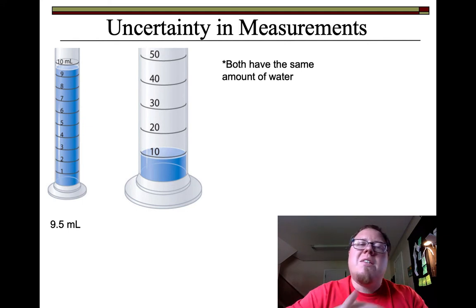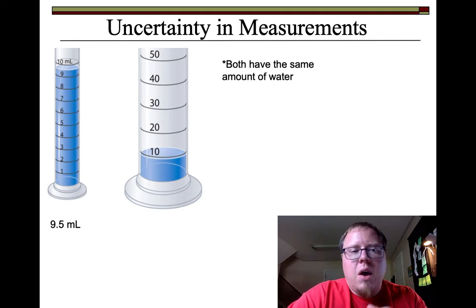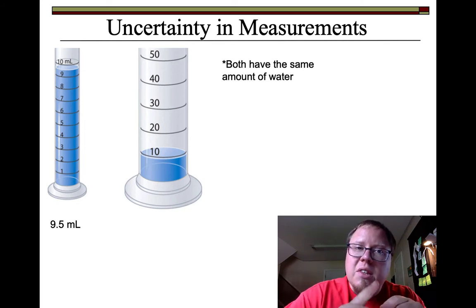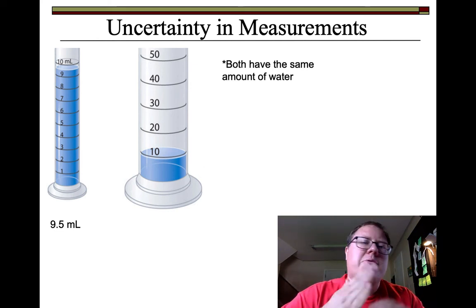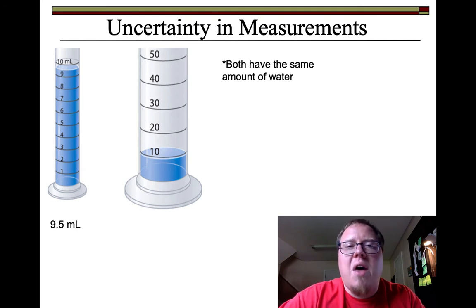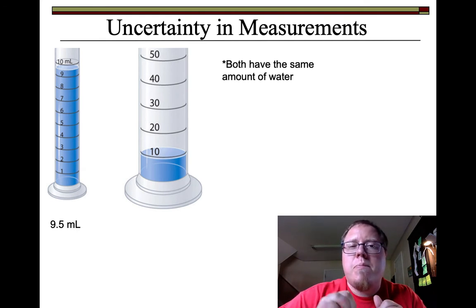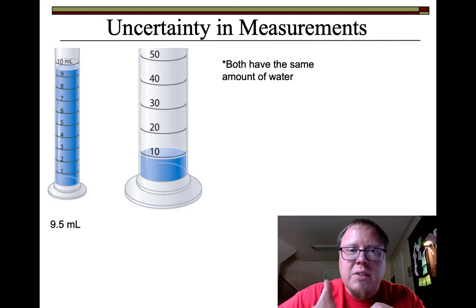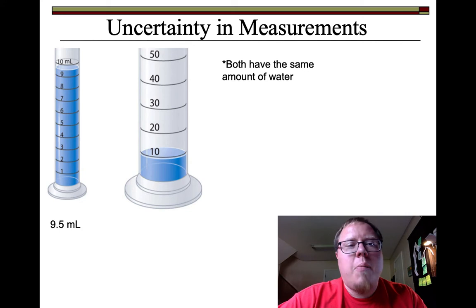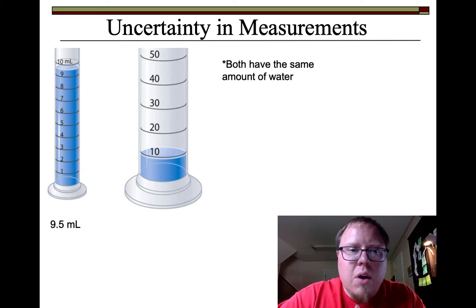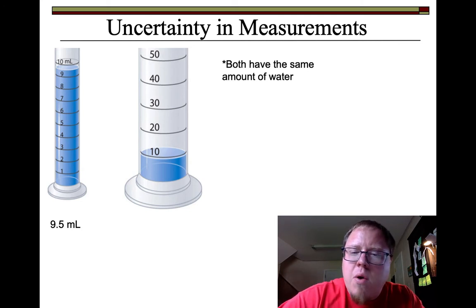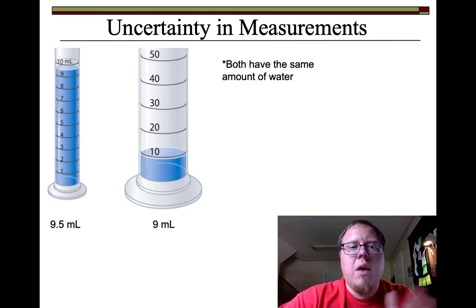That same amount of water in a different graduated cylinder — we know it's 9.5 milliliters — but looking at the second graduated cylinder, that one starts at 0 and goes all the way up to 10. There are no lines in between to fine-tune it down to a decimal place. So looking at just that graduated cylinder, I would say it's probably about 9 milliliters.